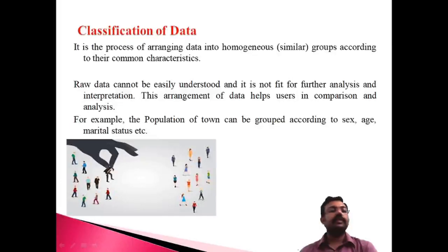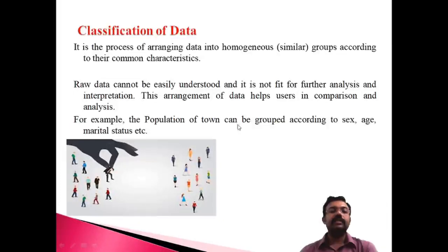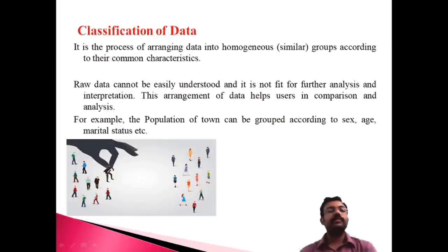Raw data cannot be easily understood and is not fit for further analysis, so classification is essential. After classification, data can be easily compared. For example, a population of a town can be grouped according to sex, age, and marital status — males in their group, females in their group, and marital status in different categories. This process of separating data into categories is known as classification.